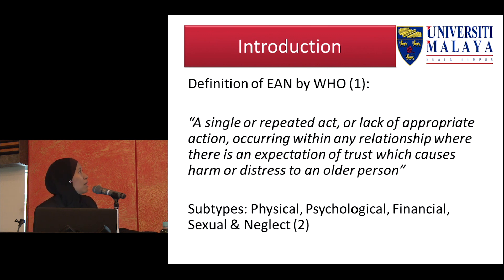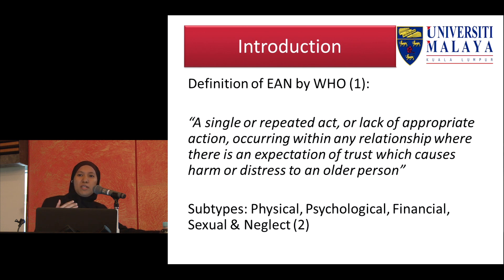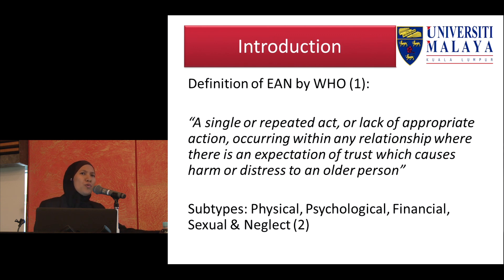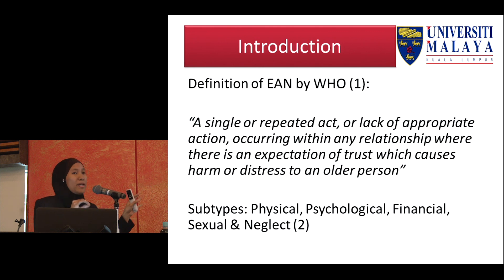The WHO definition is: a single or repeated act, or lack of appropriate action, occurring within any relationship where there is an expectation of trust — the word trust is very important because it defines the dynamic of the relationship — which causes harm or distress to an older person. The main subtypes of abuse are five: physical, psychological, financial, sexual, and neglect, though existing literature shows more types exist. These are the most widely used subtypes in contemporary studies.